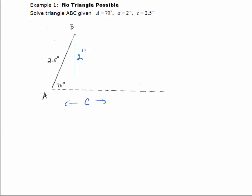is called the ambiguous case is because there are three possible scenarios that can happen when you're given two sides and the angle opposite them.